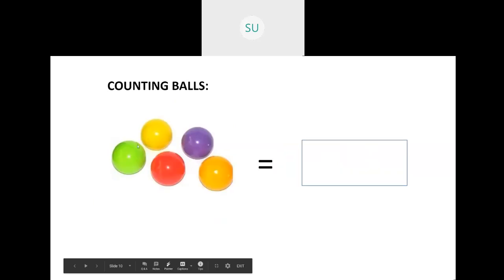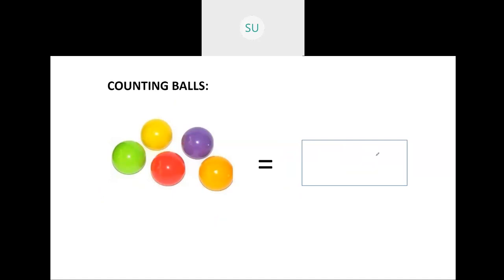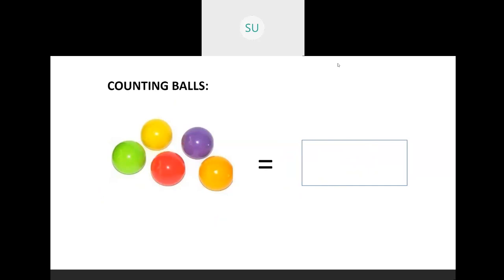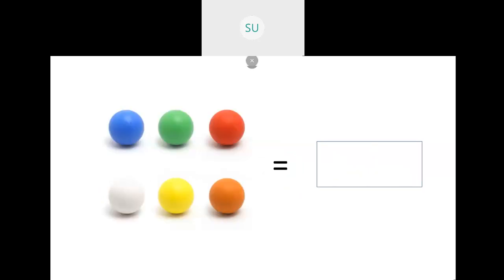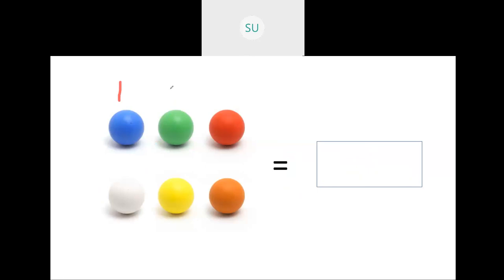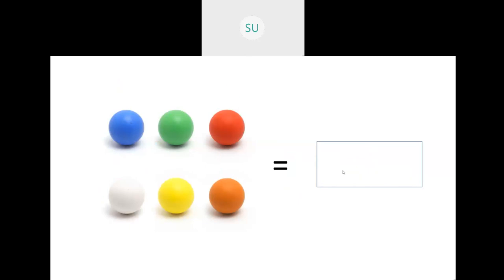Then balls — how many balls are there? 1, 2, 3, 4, and 5. So 5. This is how you count using numbers. Then here we have 1, 2, 3, 4, 5, and 6. So there are 6 balls over here. This is how you count using numbers.